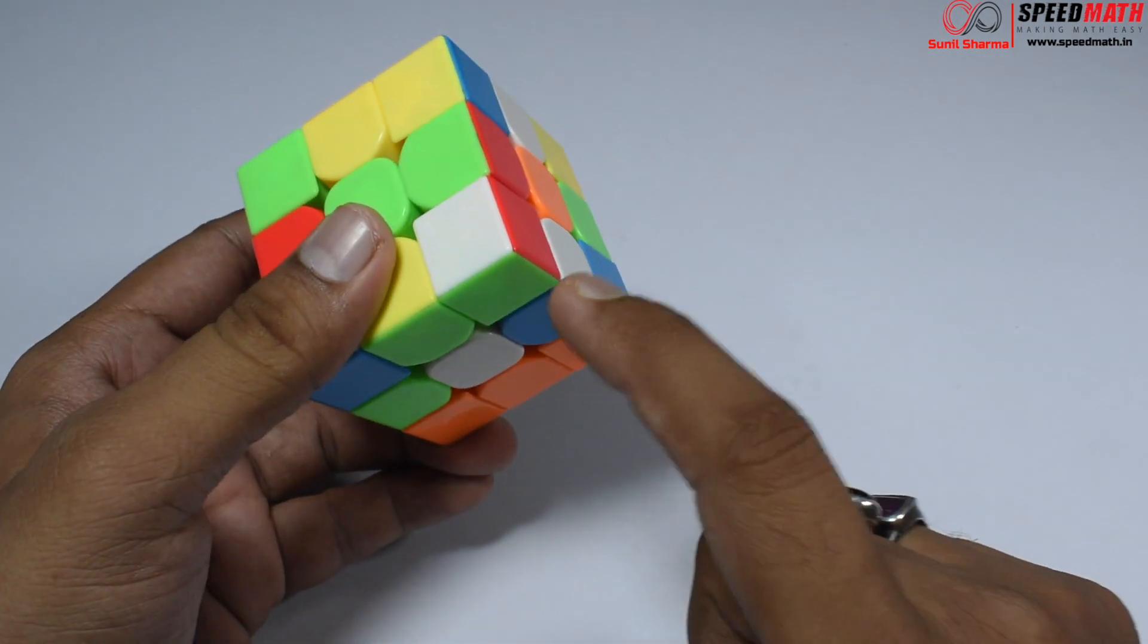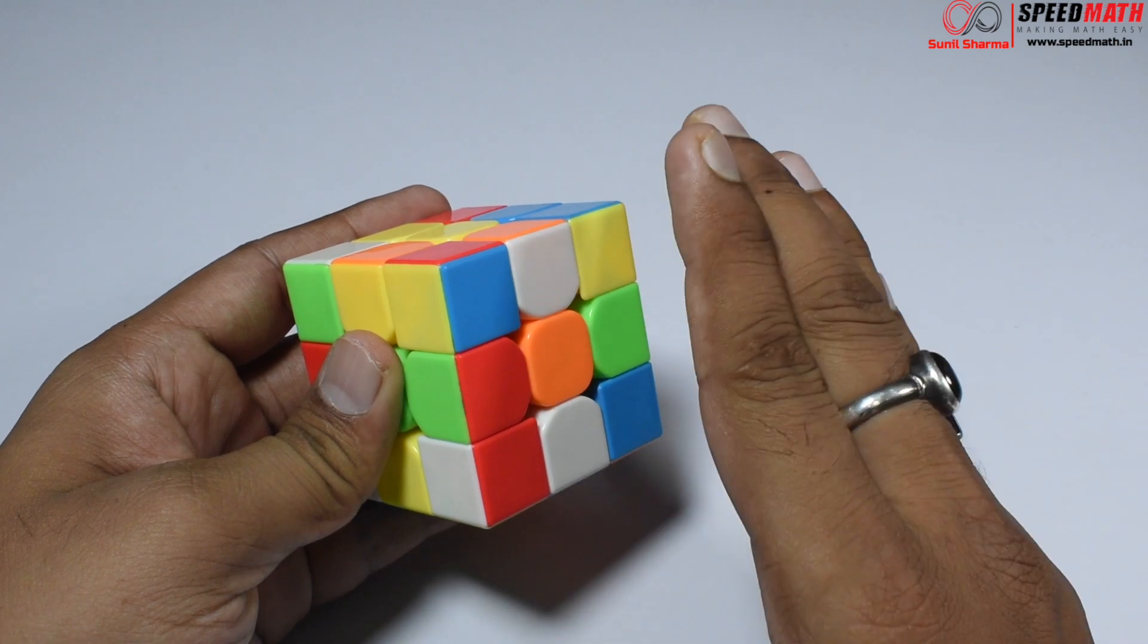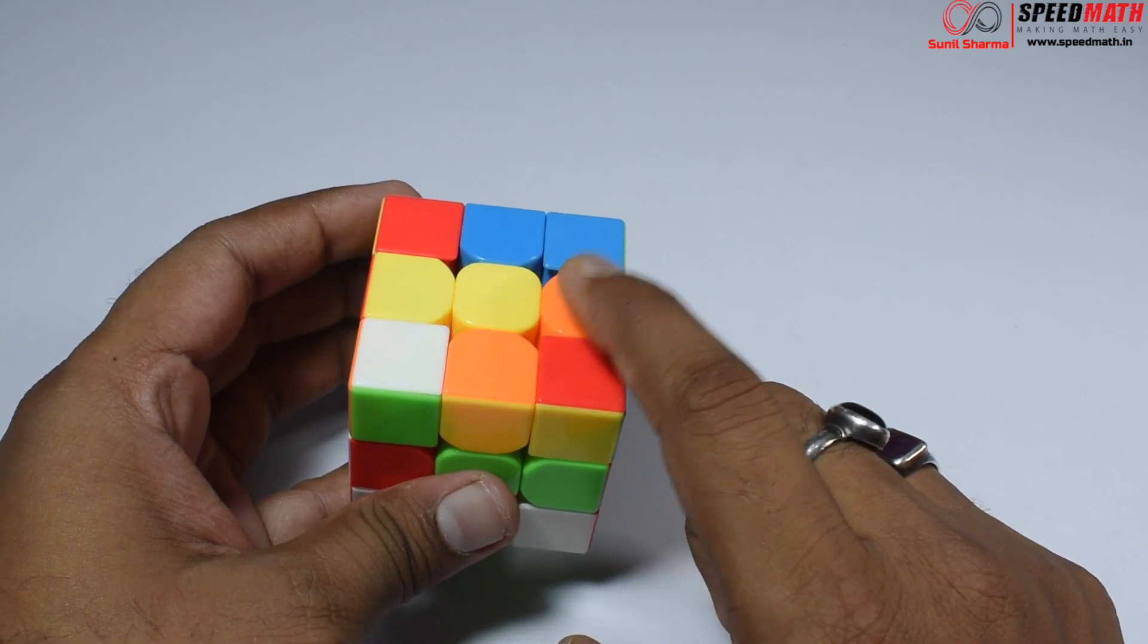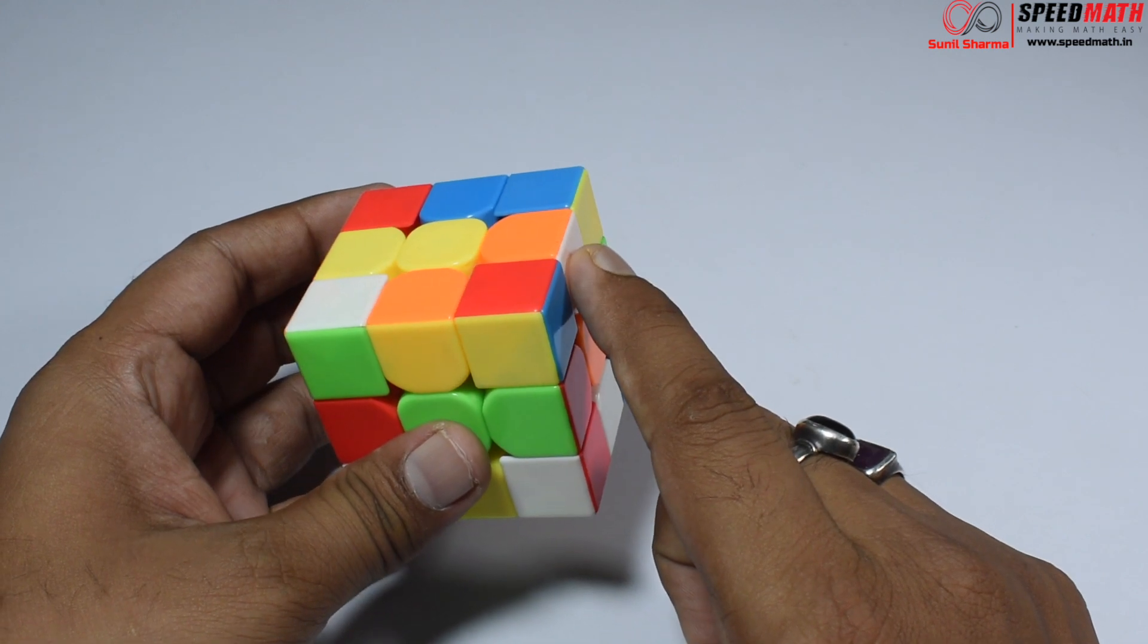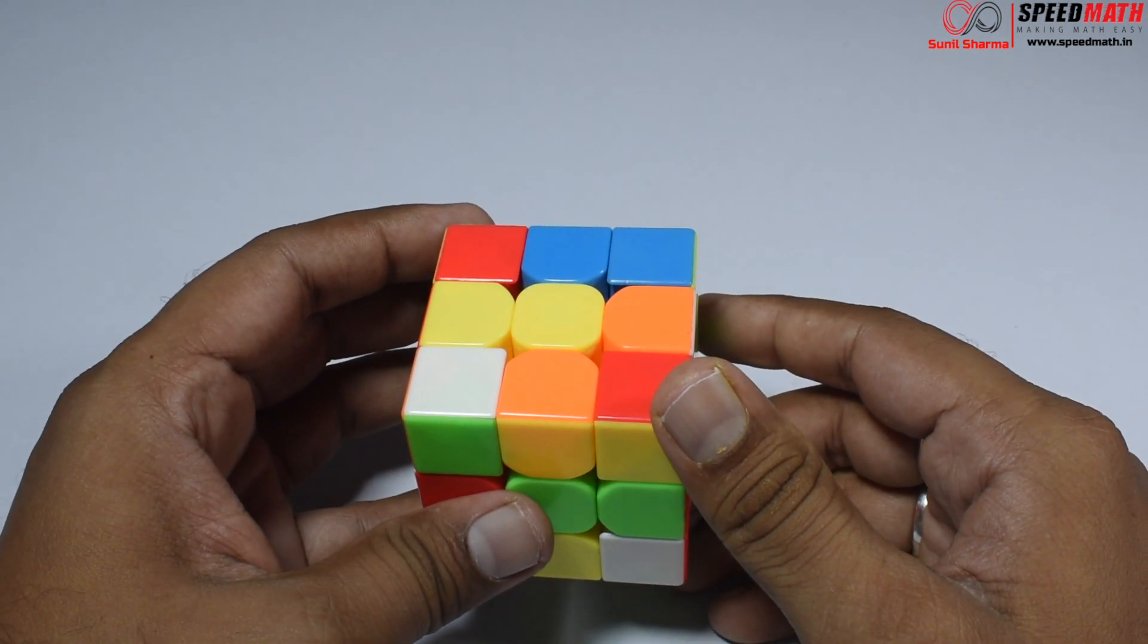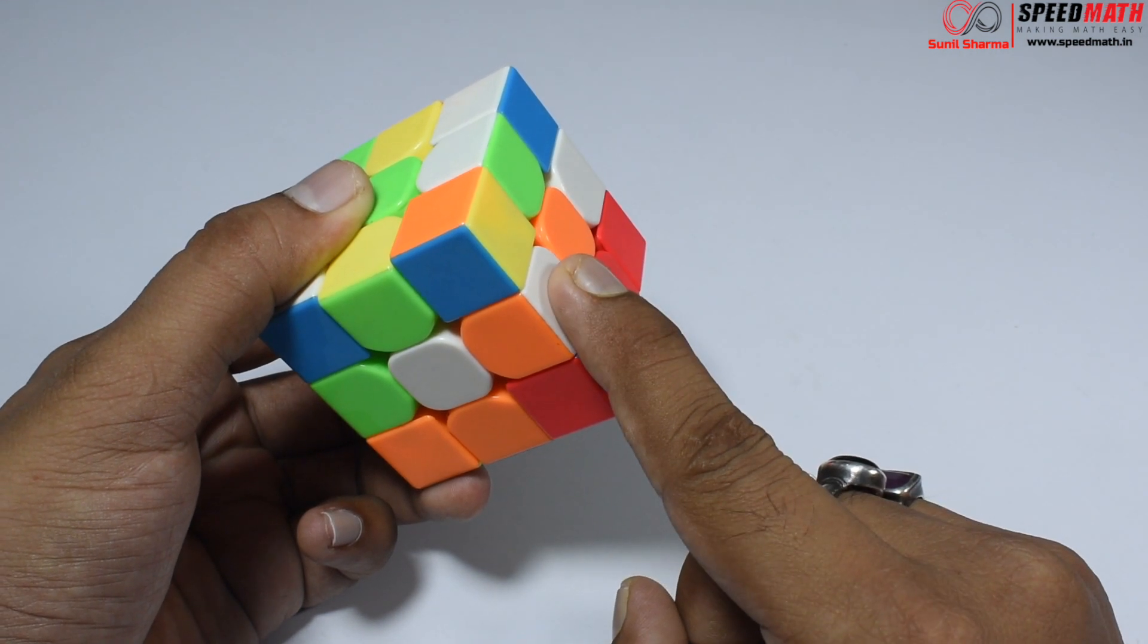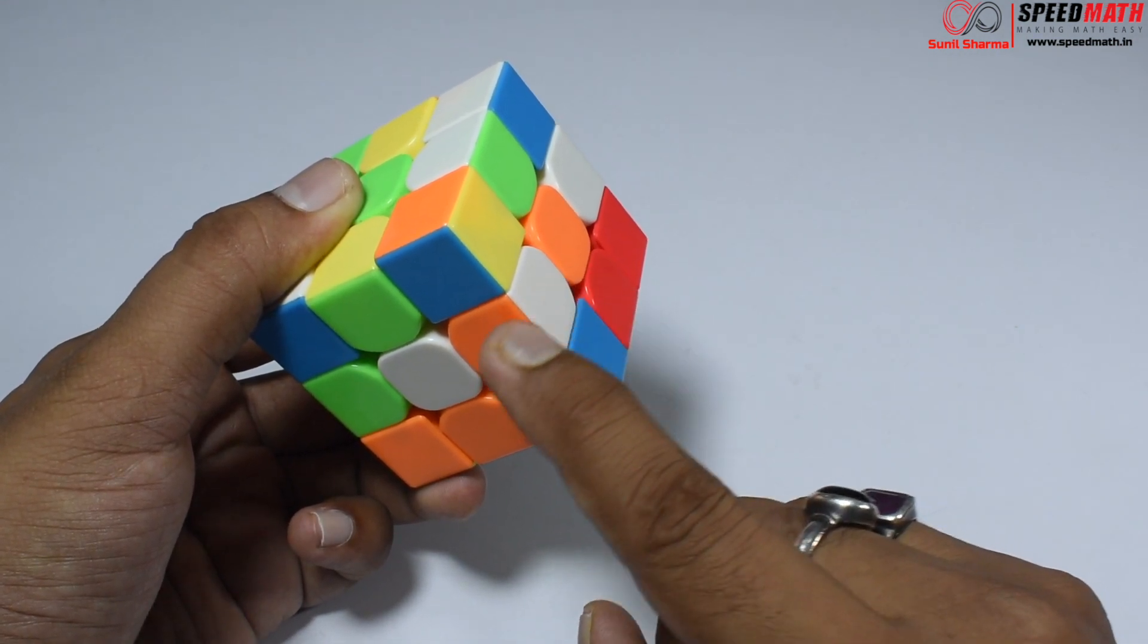You should always have the edge piece in the top layer, then rotate it back to bring it to the down layer. We already have one here. You should always have white in the top layer, but observe - white is here on the side. If I rotate and try to bring it here, white should be here and orange should be here, but the colors are flipped. This kind of piece is called a flip case.